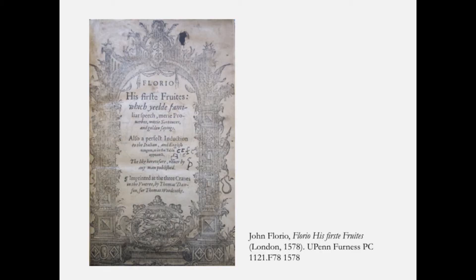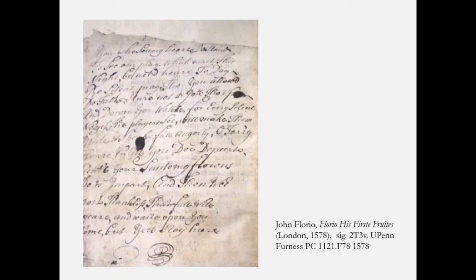Held today at the University of Pennsylvania, an annotated copy of John Florio's 1578 book of Italian and English dialogues, entitled First Fruits, shows how readers using these vernacular language manuals could do so in a way that mingled language learning with drama. An early user of this book inscribed at the book's end a prologue from a 17th century play. In this copied-in passage, the speaker reprimands an antsy audience before the play begins.